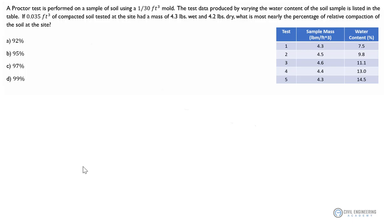If 0.035 cubic feet of compacted soil tested at the site had a mass of 4.3 pounds wet and 4.2 pounds dry, what is most nearly the percentage of relative compaction of the soil at the site? We've got an array of possible answers.